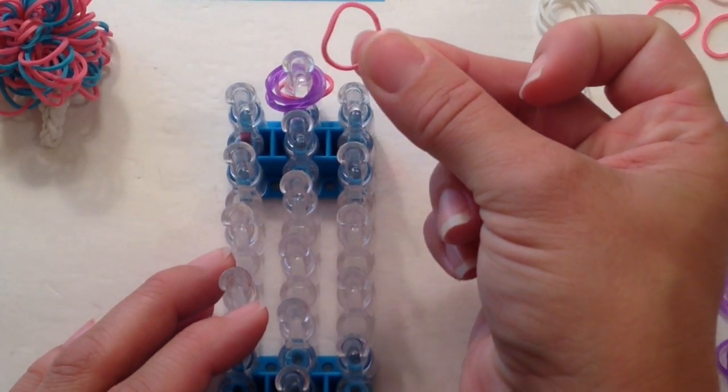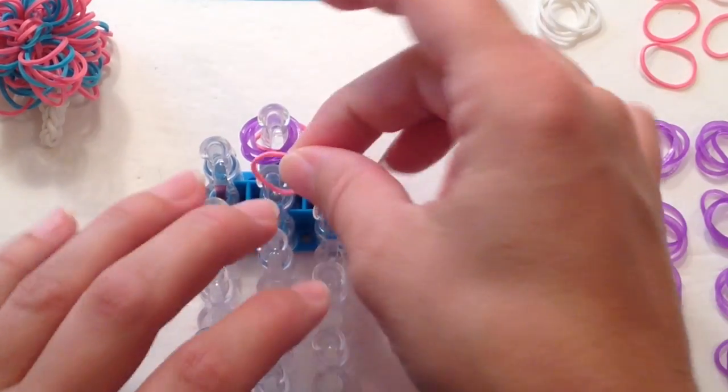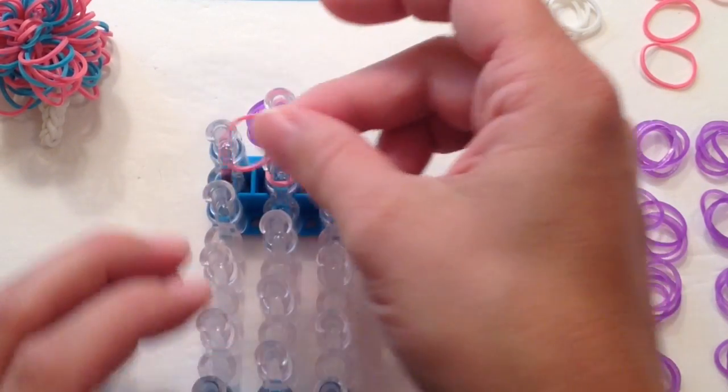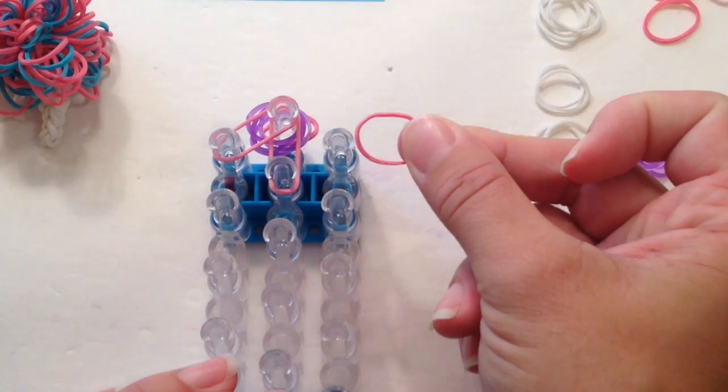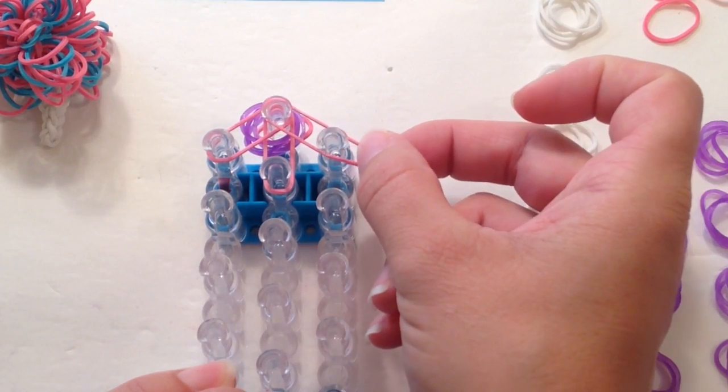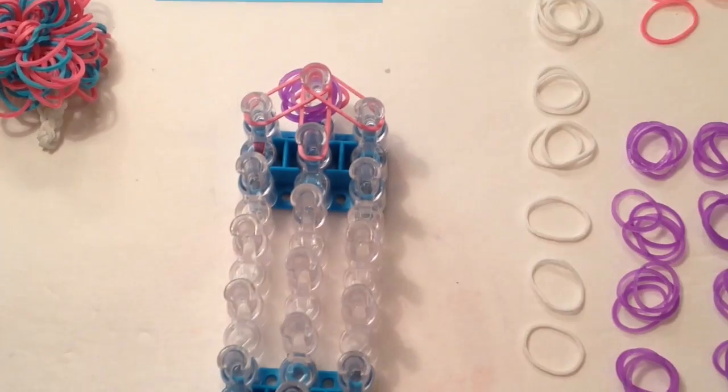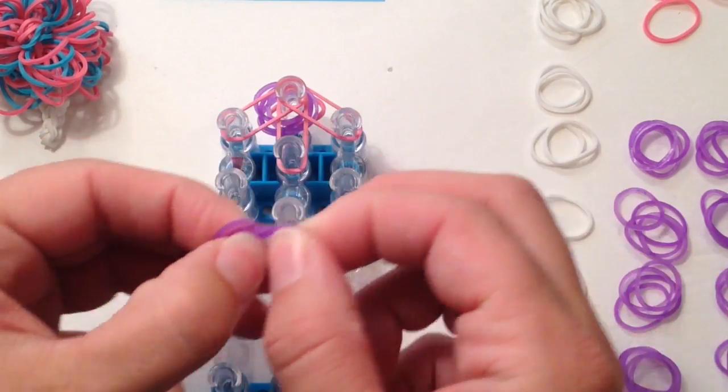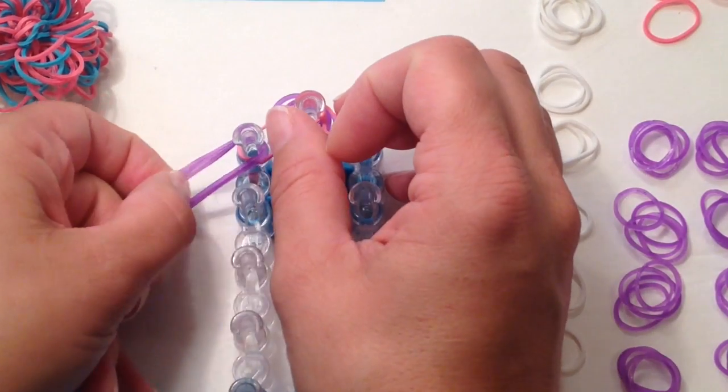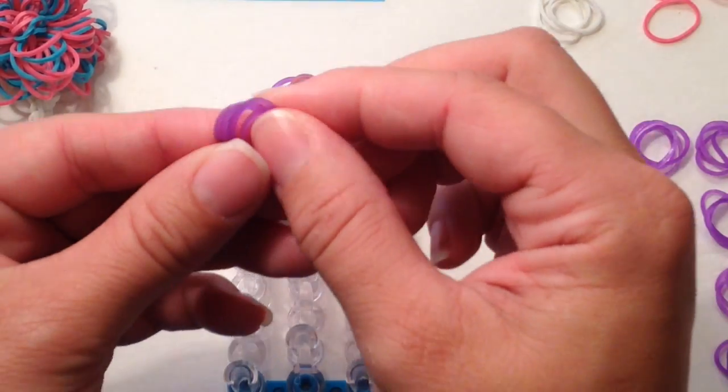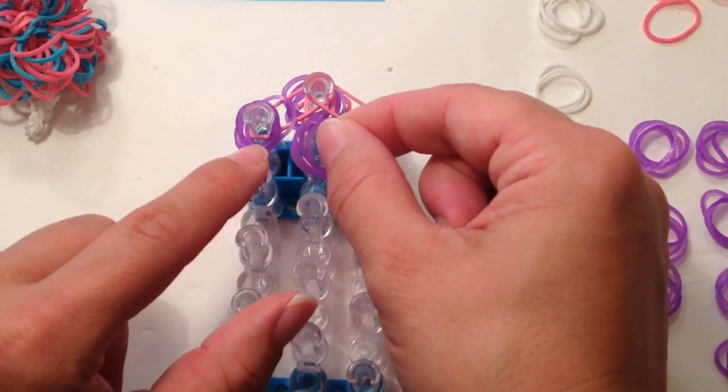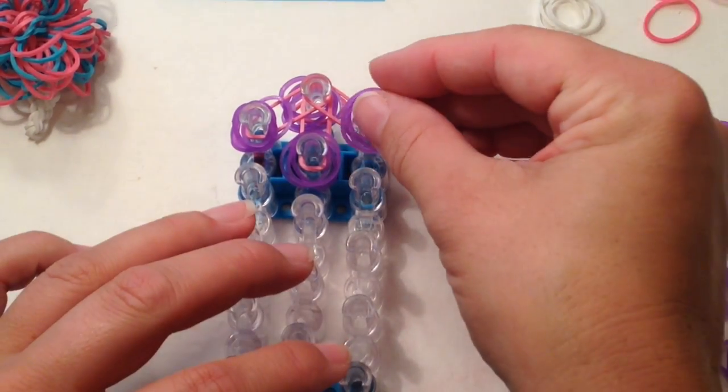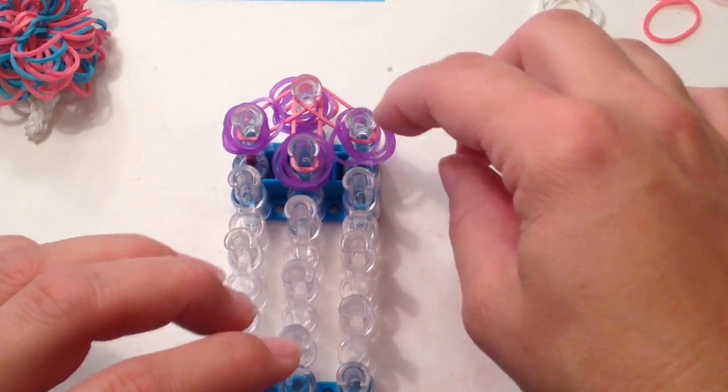Then you want to take a single pink and run it from center 1 to center 2. A single pink and run it from center 1 to left 1. Take 4 additional bands and lay it on each of these 3 pegs. So there's 4 bands on peg left 1, 4 bands going on to center 2, and 4 bands going on to right 1. And just push those down.